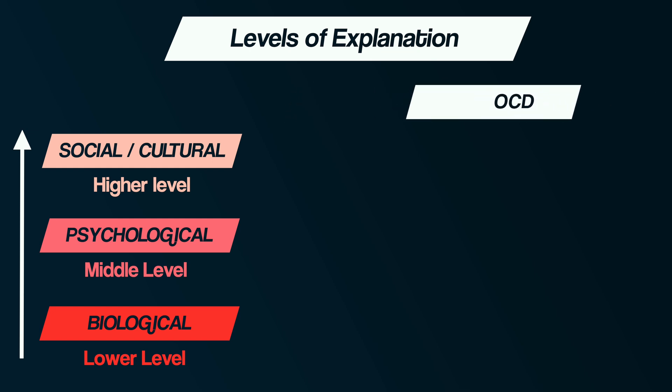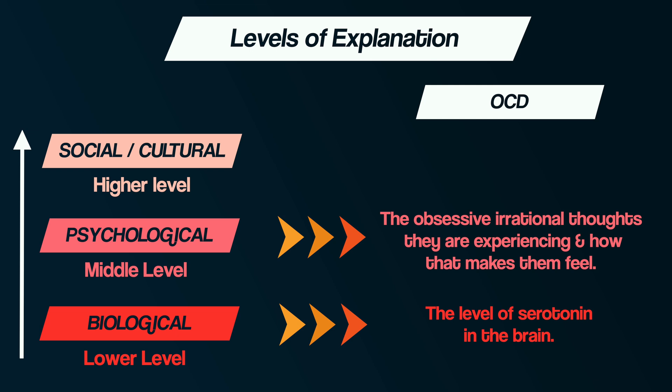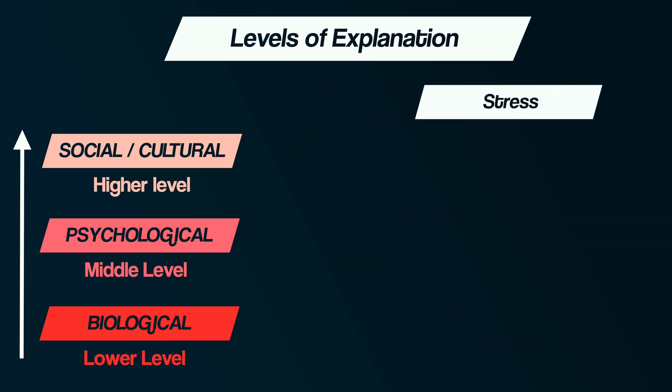For example, take OCD. At the lower biological level, we could explore the level of serotonin in the brain. At the middle psychological level, we could consider the obsessive irrational thoughts they are experiencing and how that makes them feel. At the higher cultural and social level, we could consider how OCD is affecting their social relationships.